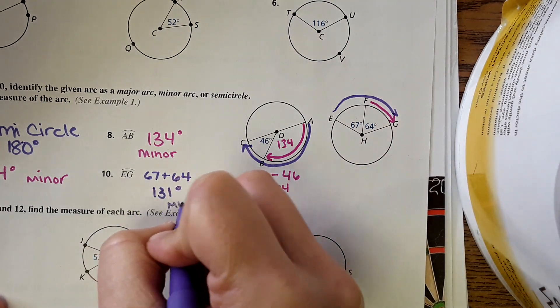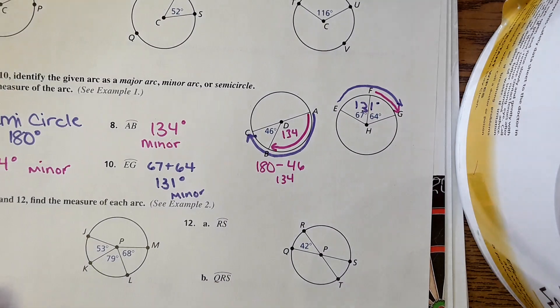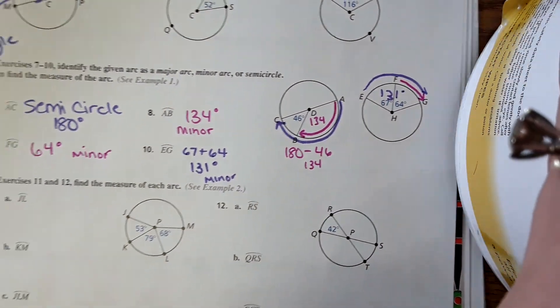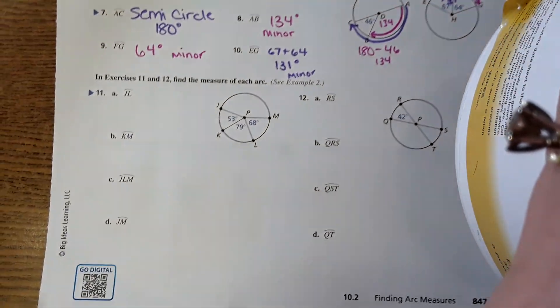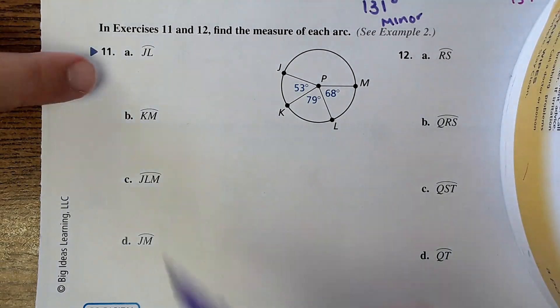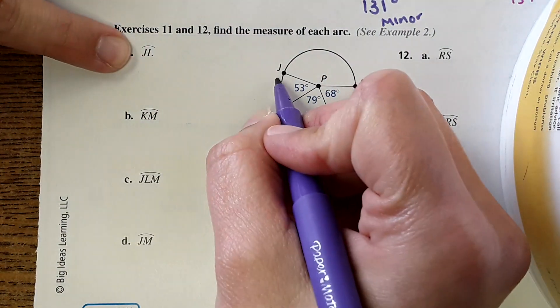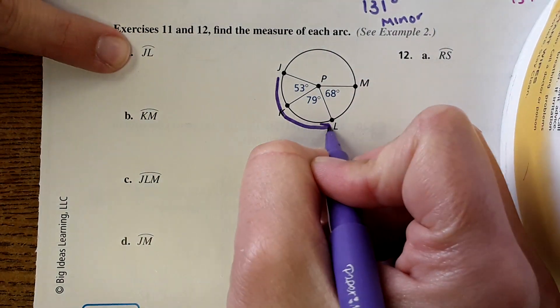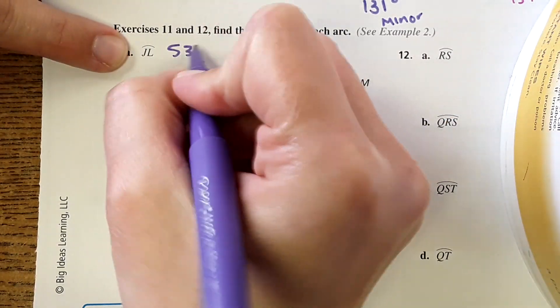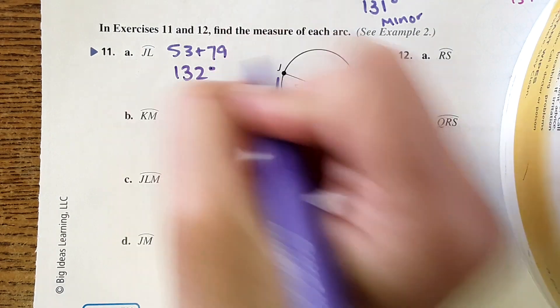Some different examples here for number 11, A through D, find the measure of each arc. Here it says JL, again go the shortest distance possible, J to L, 53 plus 79 comes out to 132 degrees.